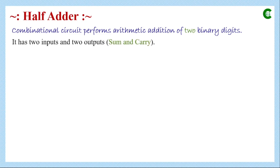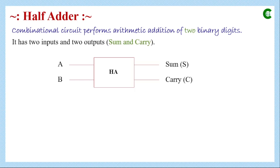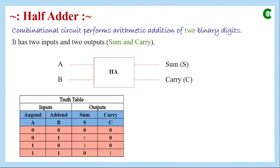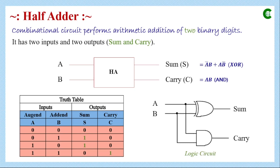A half adder has two inputs and two outputs: sum and carry. In the block diagram, A and B are the inputs, and sum and carry are the outputs. In case of a half adder, the sum is the XOR operation between inputs A and B, and carry is the AND operation between A and B.